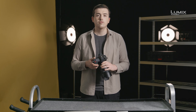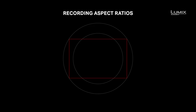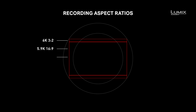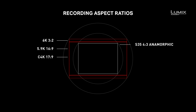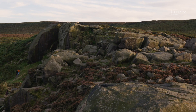The S1H comes equipped with a 24-megapixel sensor that's capable of recording up to 6K resolution in 3x2 aspect ratio, and 5.9K resolution in 16x9. On top of these, you have the ability to shoot in Cinema 4K resolution — the standard for cinema — UHD 4K, the 16x9 standard for television, 4x3 Super 35 Anamorphic 4K, as well as 1080p Full HD modes as well.